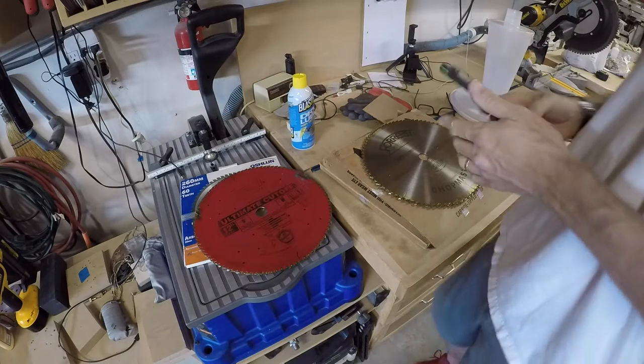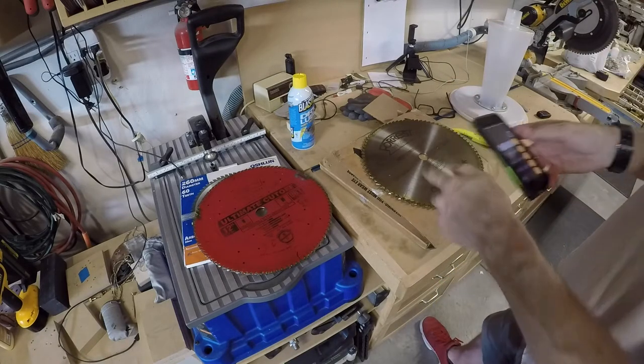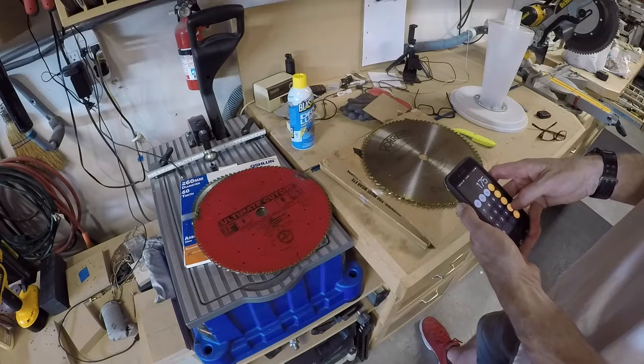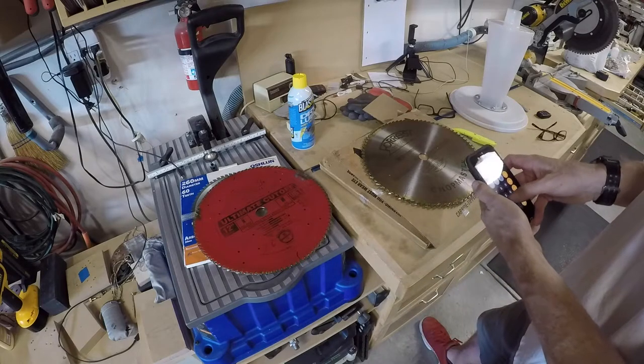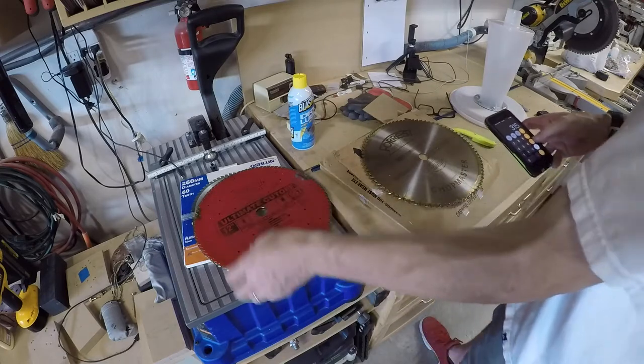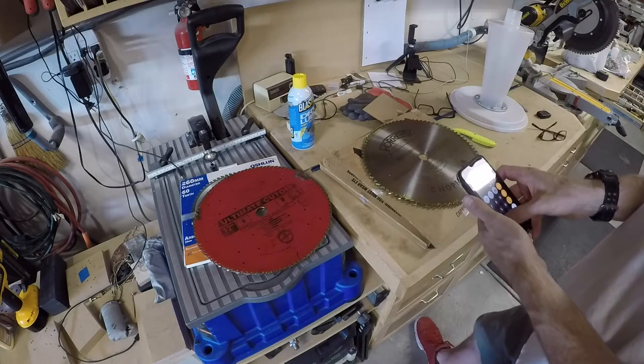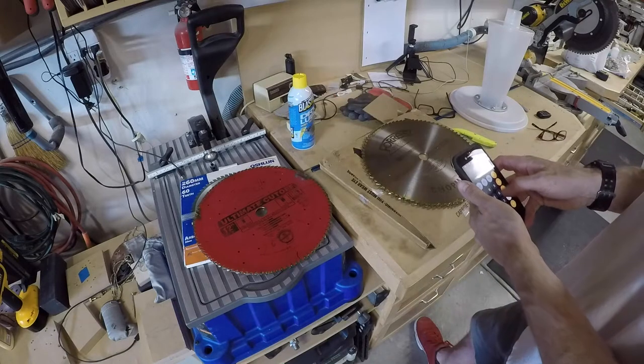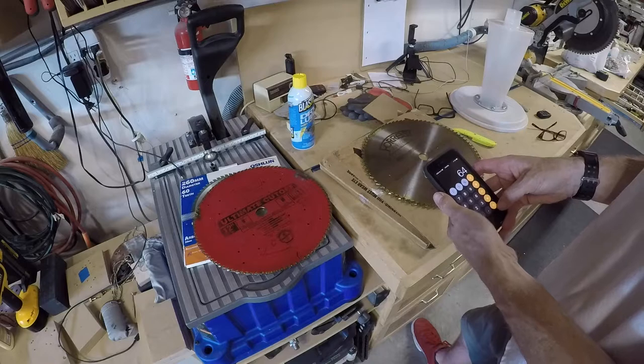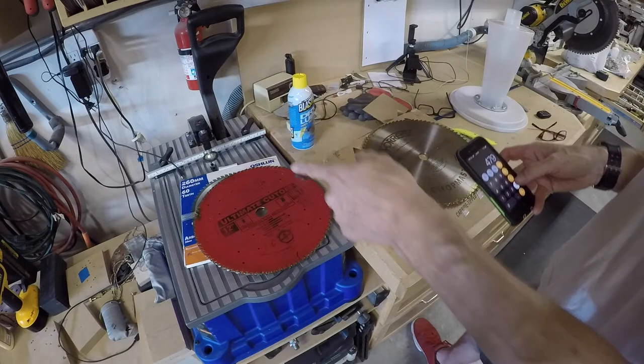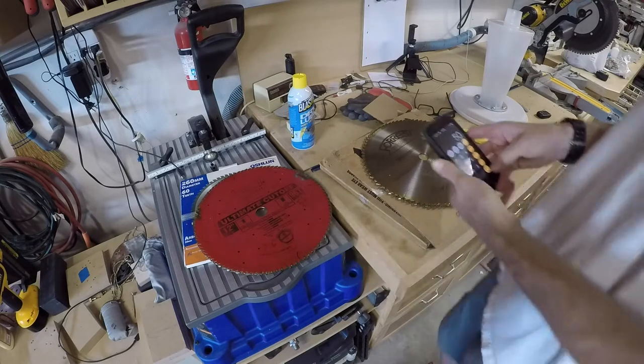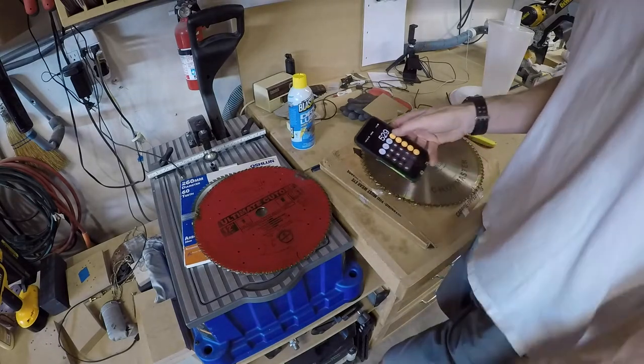Let's add all this stuff up. So that's $175 plus $140 plus the Jesada, we'll call that $100, plus the $64 for the glue line rip with the tax, plus the Oshlun. I think that's about $50, so that's $529.